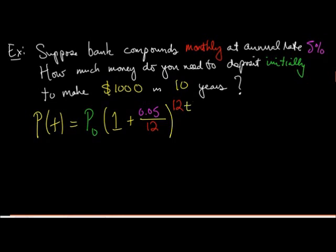So we want to make $1,000 in 10 years. So 1,000 should equal p0 times 1 plus all of this stuff. All right, I'm just going to rewrite it. Divided by 12 to the 12th power and times 10 now. Okay?